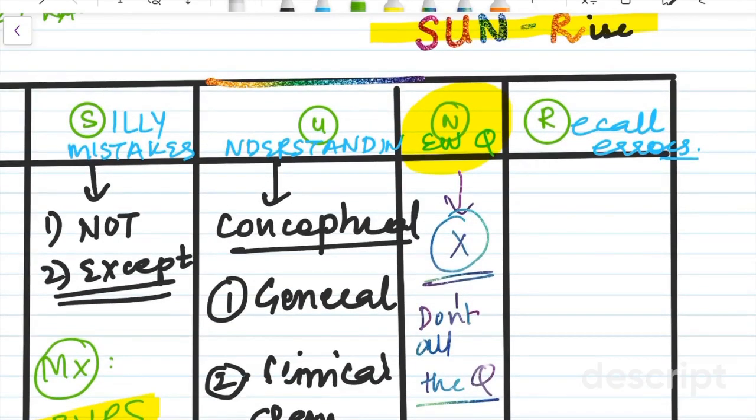Read the explanation once and then you can move forward. Another set of questions which we do wrong, which is another blunder is actually the recall errors. So recall errors basically constitute the questions which are present in your notes. You have them in your notes. In fact, every coaching notes has them.